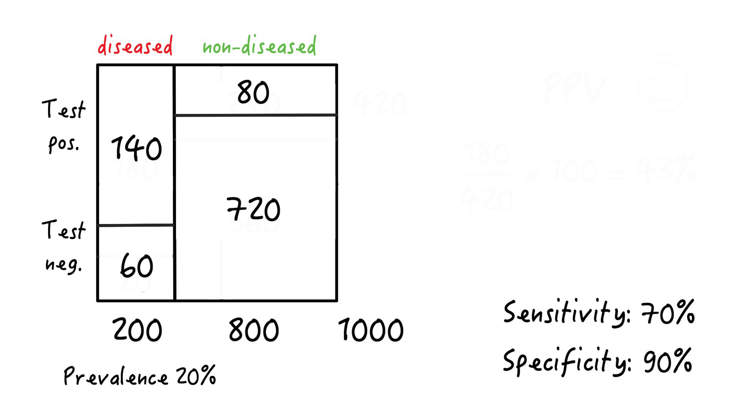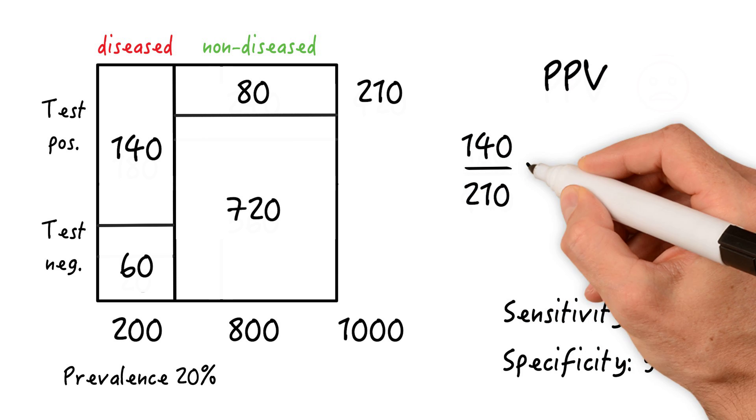So overall, there are 210 people who test positive. The positive predictive value is thus 140 divided by 210 times 100, which equals 67%. So much better than our initial 37%, right?